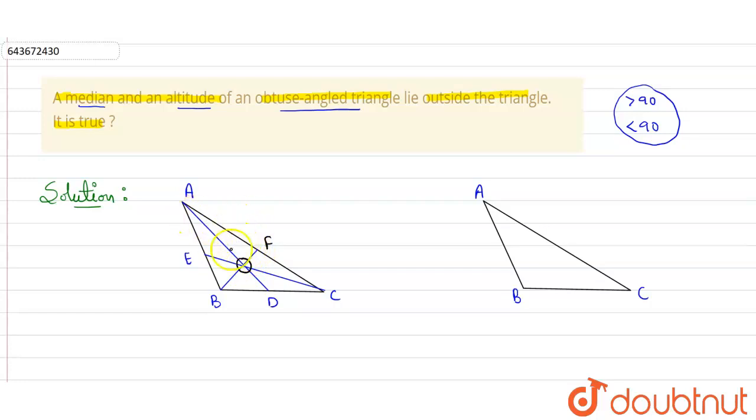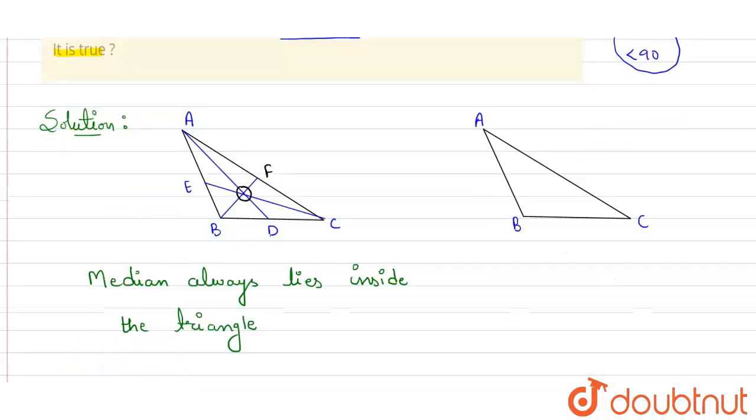So F will be the midpoint here. So here, medians always collide at a single point. Here it is clearly visible because this vertex joins the opposite side at the midpoint of that side. So we can say that median always lies inside the triangle. Median always lies inside the triangle.